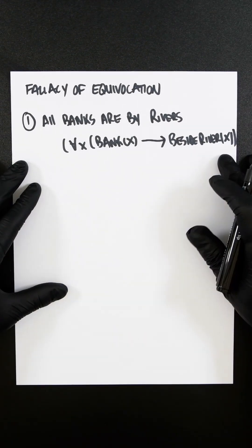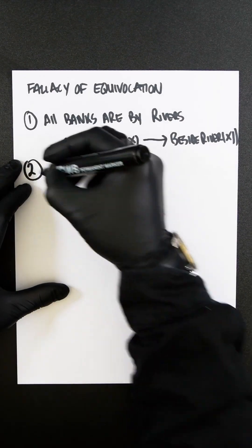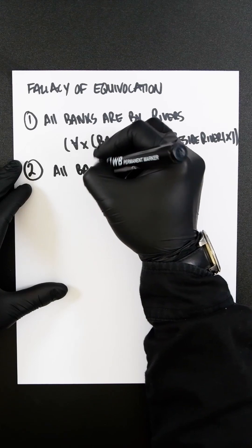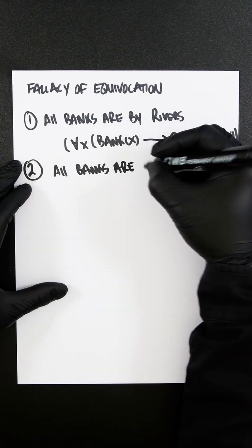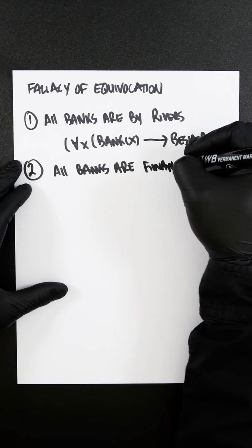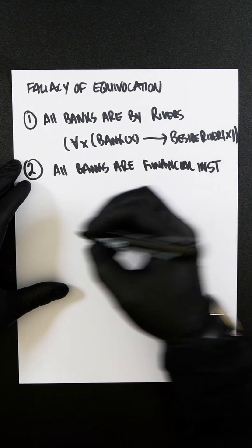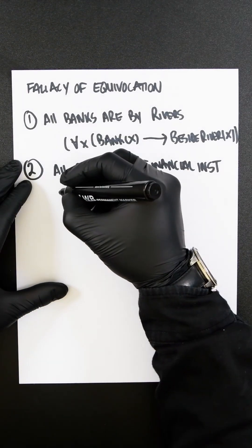That's how you write this in predicate logic. And then two, let's say all banks are financial institutions. I'm not going to write institutions.